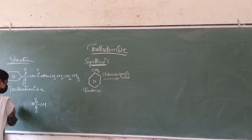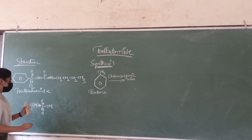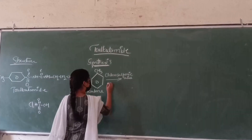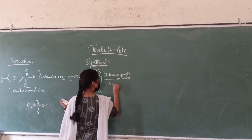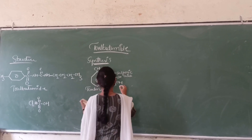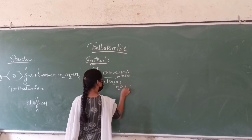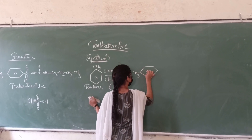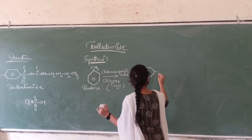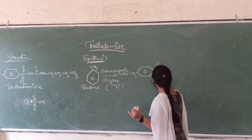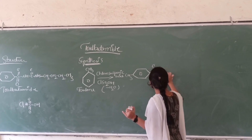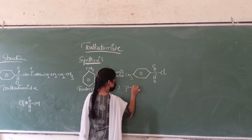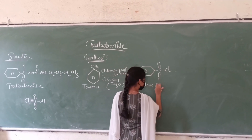If you see the structure, this is the structure of sulfuric acid. If one OH is replaced with chlorine, then it is known as chlorosulfonic acid — that is SO2Cl. Here, removal of water takes place, and the compound at the para position — para-toluenesulfonyl chloride — will be formed.